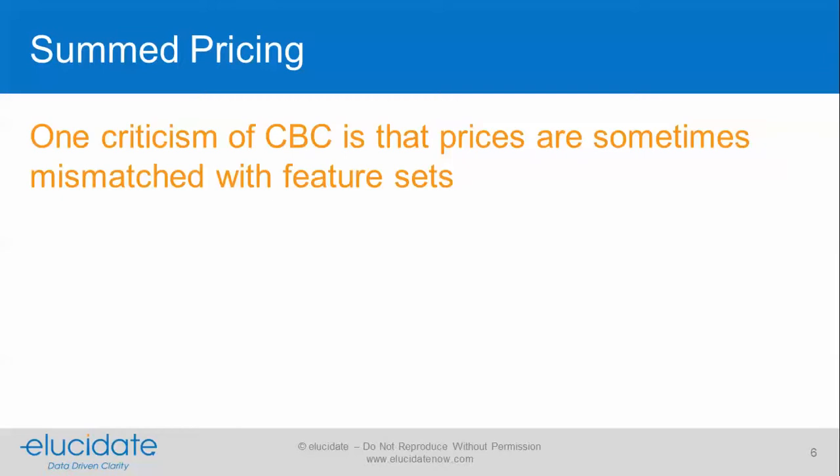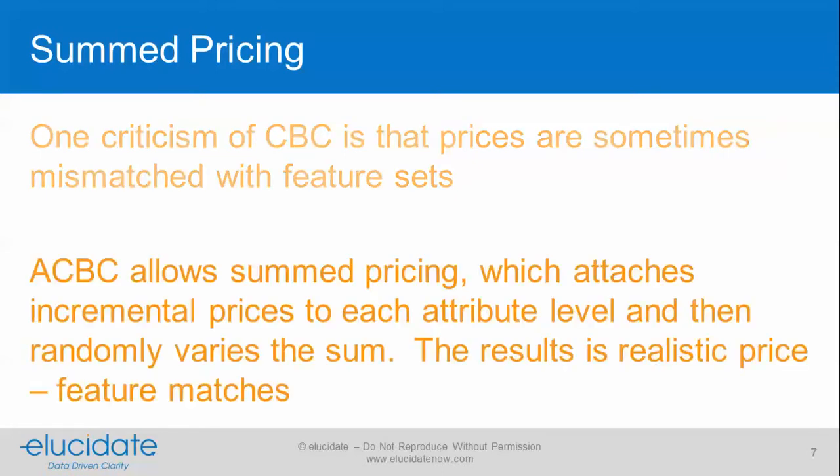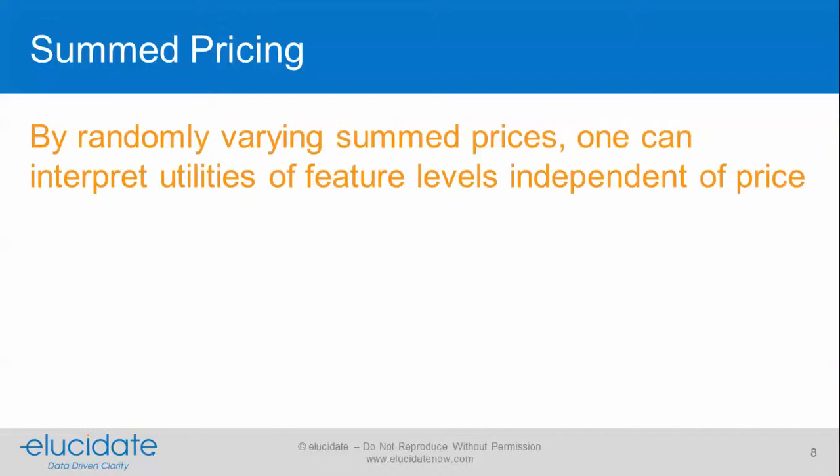Let's talk about summed pricing before we go on. One criticism of CBC is that prices are sometimes mismatched with feature sets — you might see a fully loaded product with a low price, or a stripped down product with a high price. ACBC allows summed pricing, which attaches incremental prices to each attribute level and then randomly varies the sum, resulting in realistic price-feature matches.